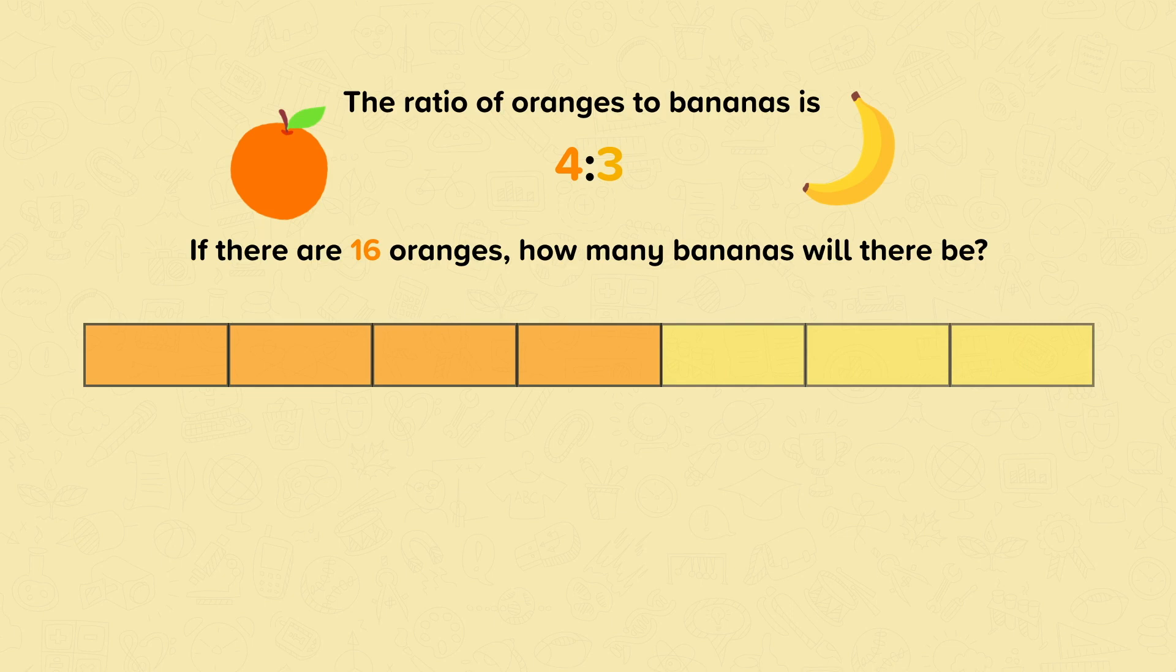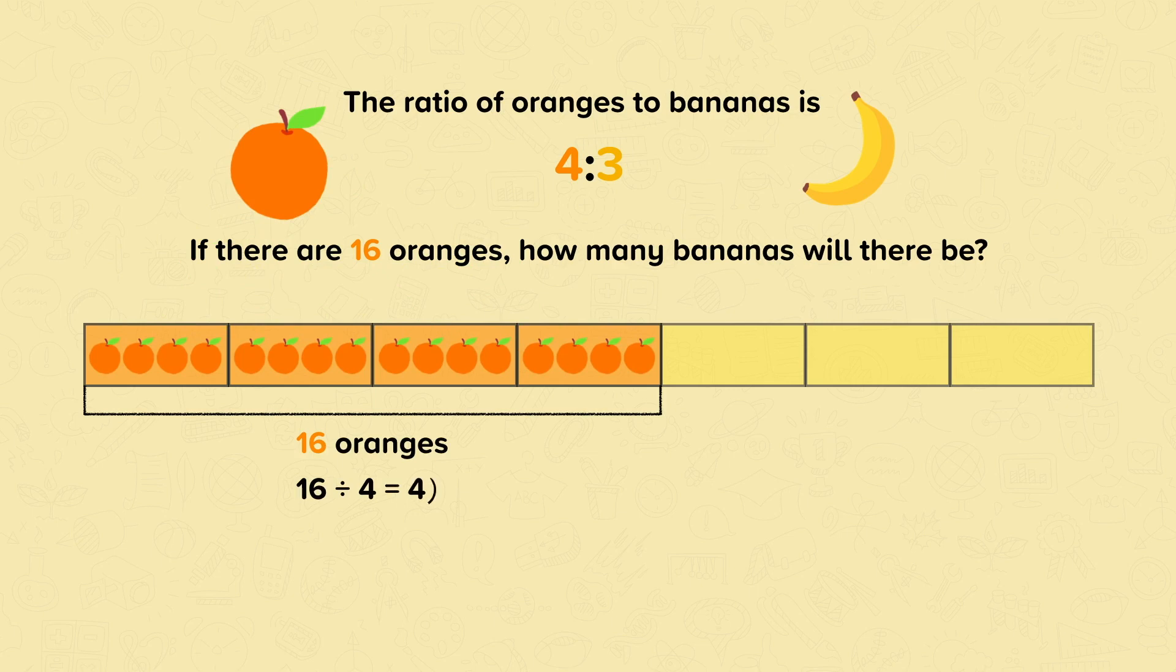Divide 16 oranges into the first four parts equally. 16 oranges divided by 4 equals 4. There are four oranges per part.